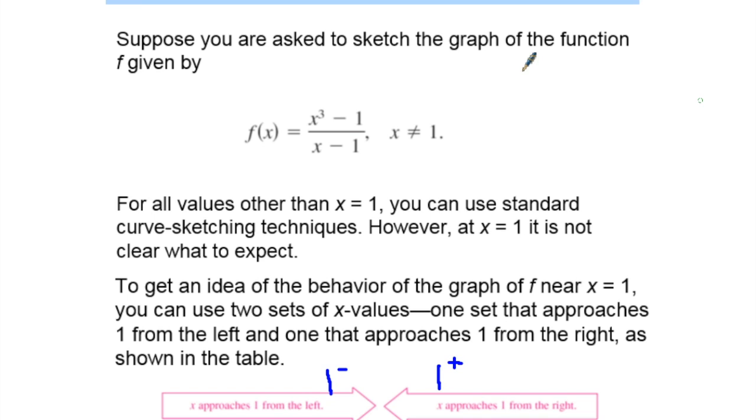For all values other than 1, you can use standard curve sketching techniques. However, at 1, it is not clear what to expect. To get an idea of the behavior of the graph of f near x = 1, you can use two sets of x values: one set that approaches 1 from the left and one that approaches 1 from the right, as shown in the table.